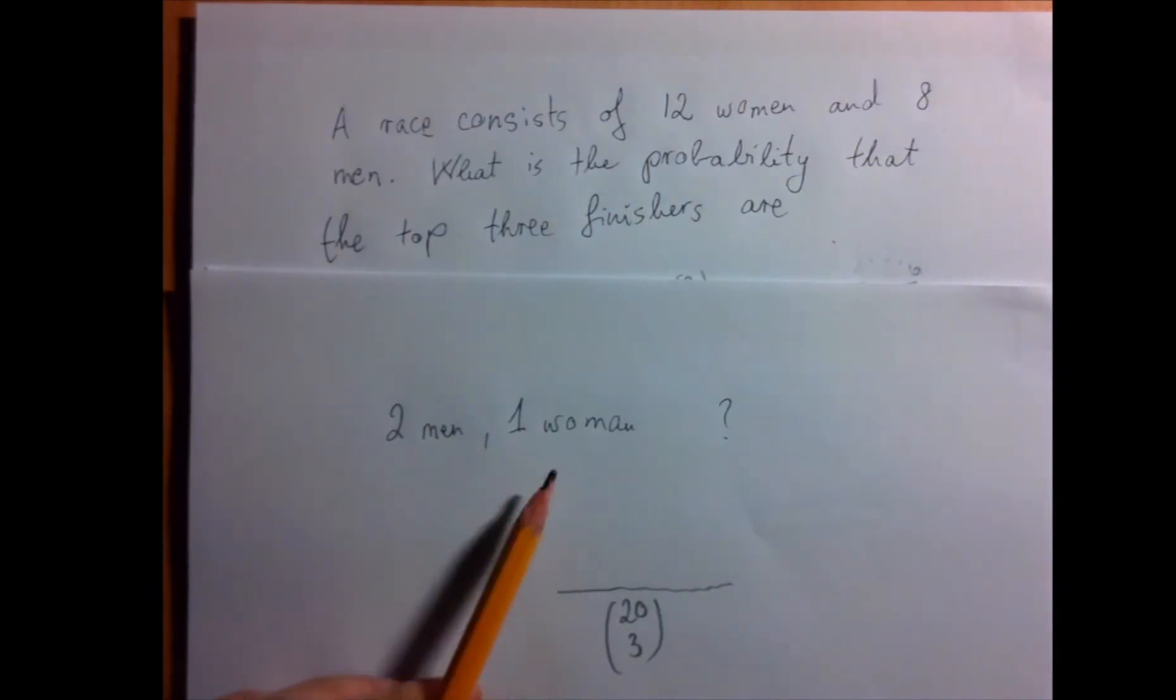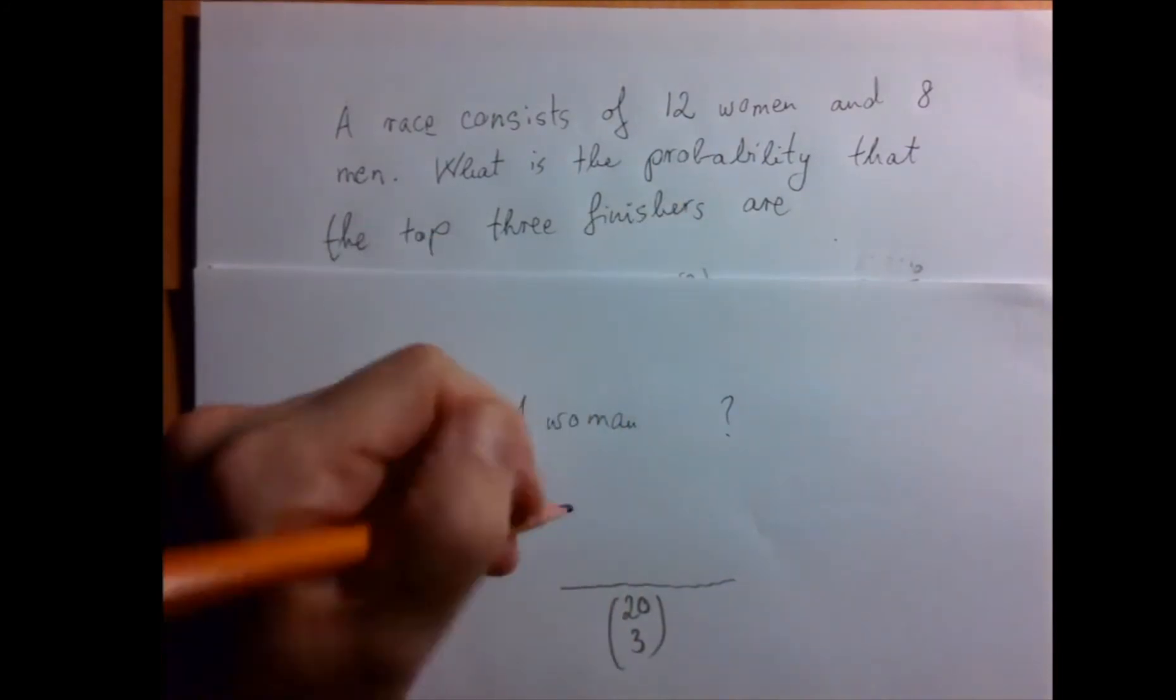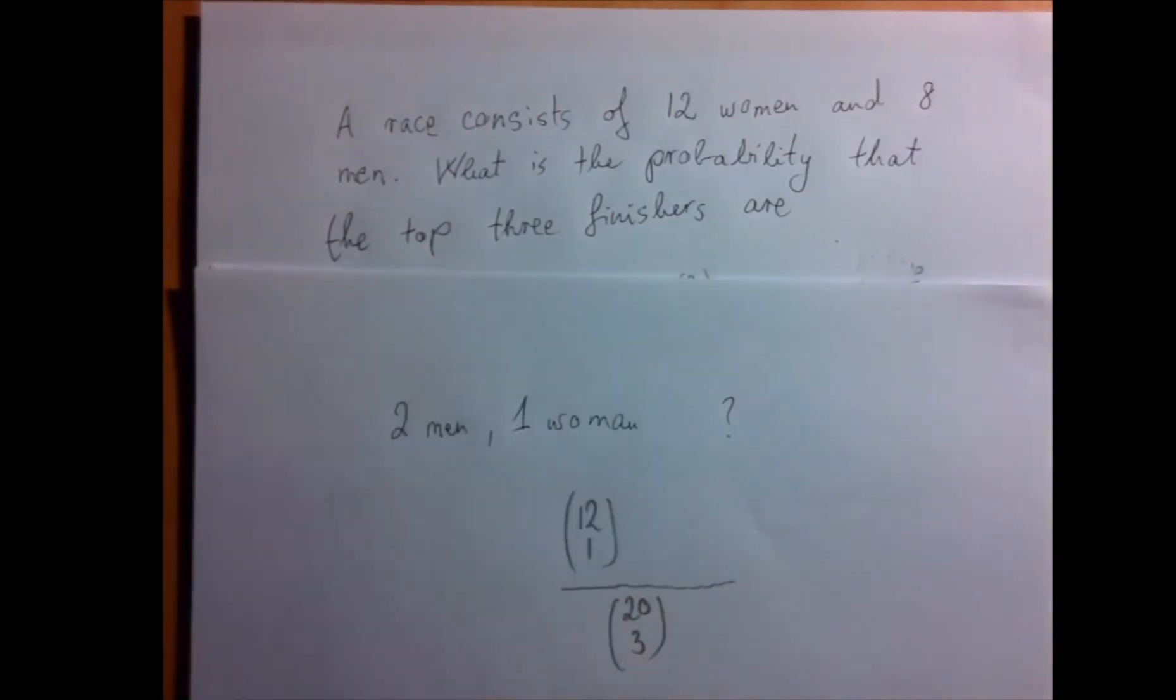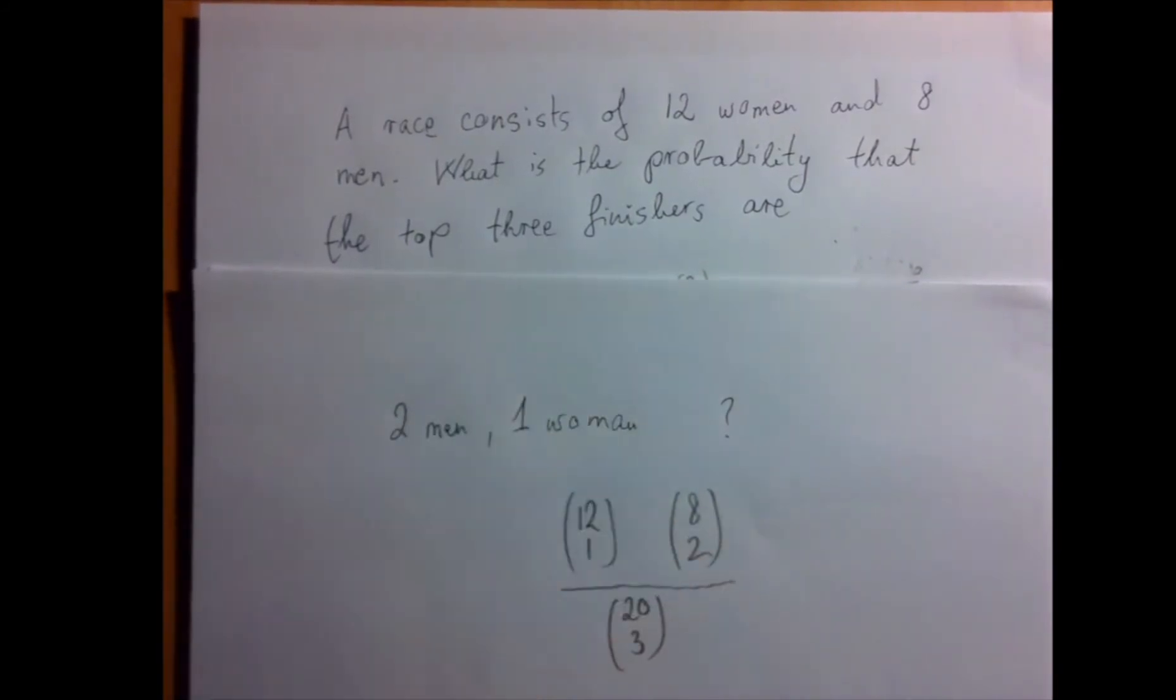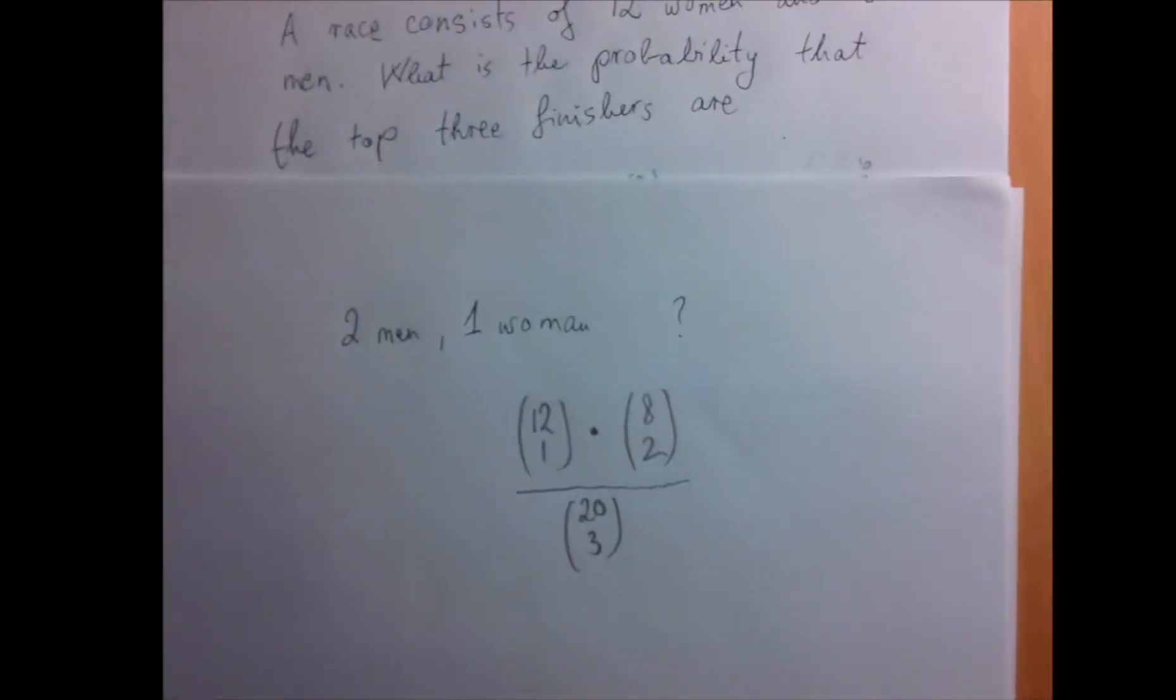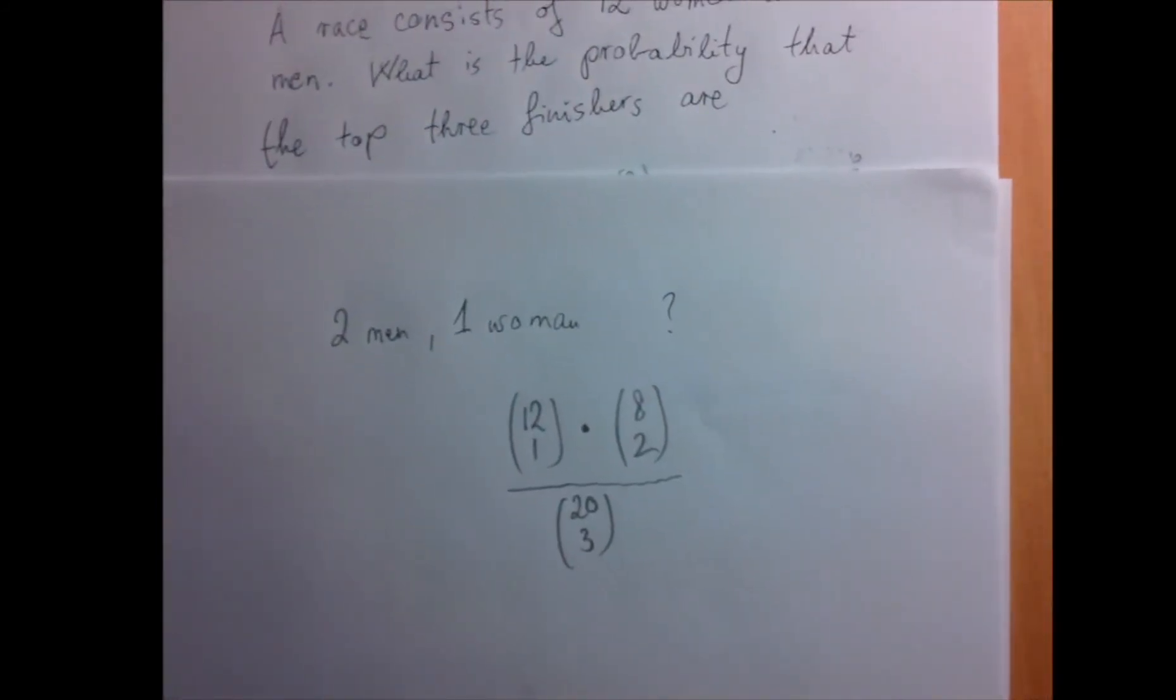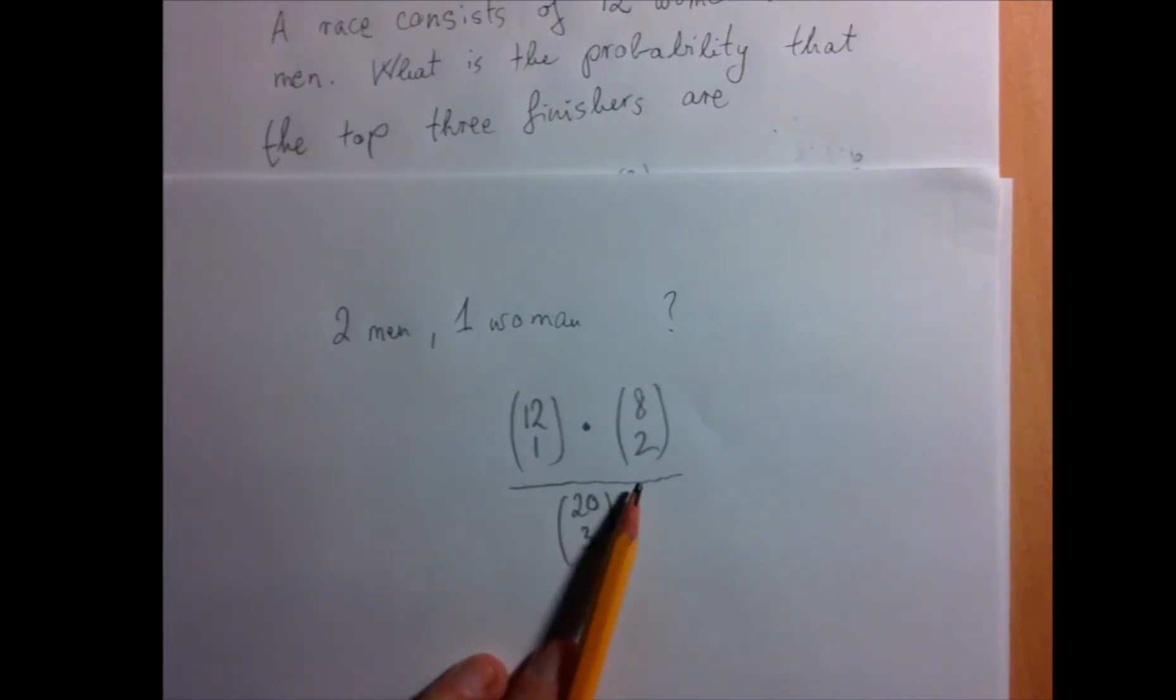If we want one woman, how many ways can we select that? That's 12 choose 1. And if we want two men, that's 8 choose 2. And no matter who the woman is, there is an independent selection for the men. So we multiply these two. This is the formula. 12 choose 1 is how we select the one woman finalist, and 8 choose 2 is how we select the two men finalists.